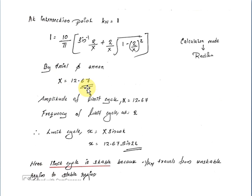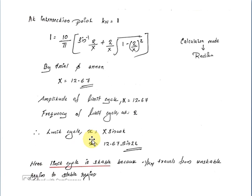Therefore, the amplitude of the limit cycle is X equal to 12.67 and the frequency is ω equal to 2. The limit cycle can be written as X equal to 12.67·sin(2t). The limit cycle is stable.